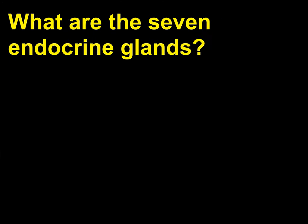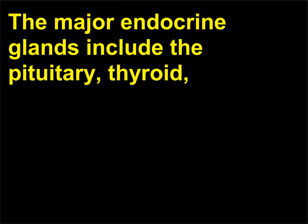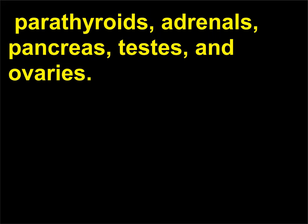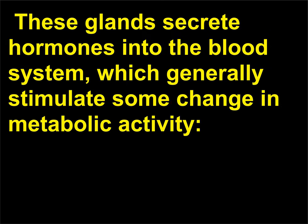What are the seven endocrine glands? These glands include the pituitary, thyroid, parathyroids, adrenals, pancreas, testes, and ovaries. These glands secrete hormones into the blood system, which generally stimulate some change in metabolic activity.